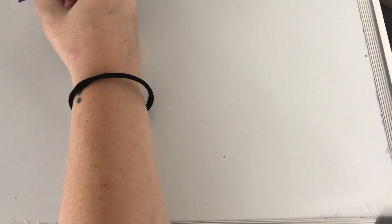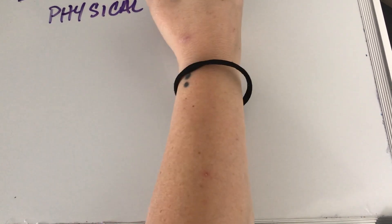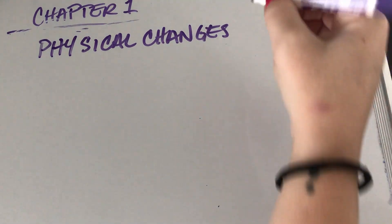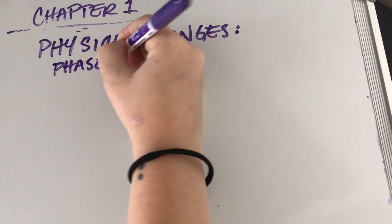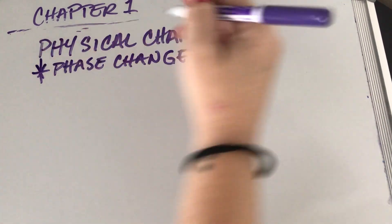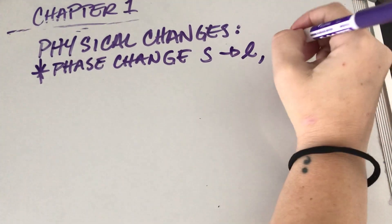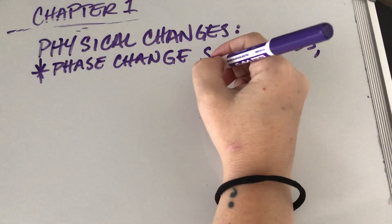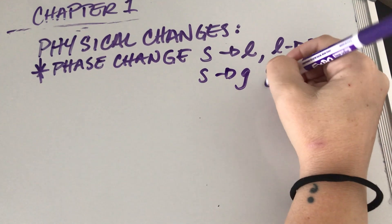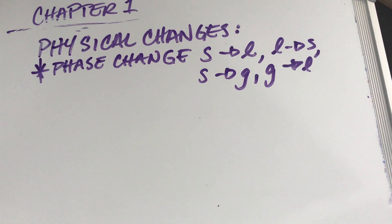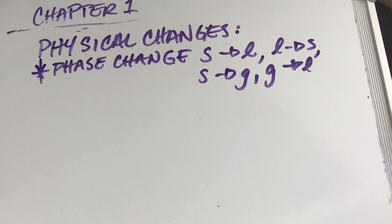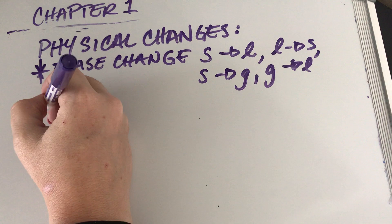All right. So we talked about physical changes. So one kind of physical change that we can have is a phase change, which would be going from a solid to a liquid, a liquid to a solid, solid to a gas, gas to a liquid, et cetera. Any of those combinations. I don't think I listed them all, but you guys can use your imaginations. There's a lot of different phase changes we could have. So that's one type of physical change.